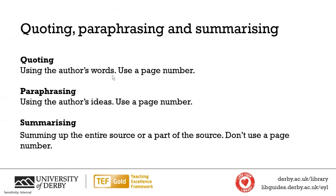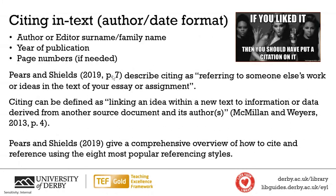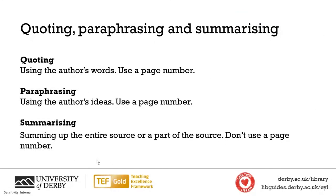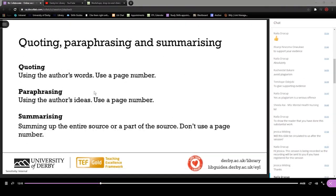The third thing you can do is summarizing, which does not need a page number. That is essentially where you take the whole of something and summarize what the point of it is. Going back to the last slide, the example reads: 'Pears and Shields 2019 give a comprehensive overview of how to cite and reference using the eight most popular referencing styles.' That is a summarization of the whole thing. You can summarize a chapter and that wouldn't need a page number. If it's only two or three pages, I'd probably say that's more paraphrasing. I'd recommend using a page number only when quoting or paraphrasing, because those ideas come from a specific page. That's all the content for this referencing video — if you're interested in other referencing videos, we've created a playlist that is on screen now.